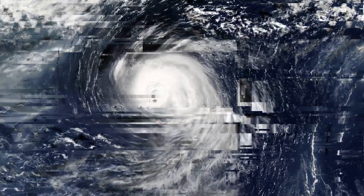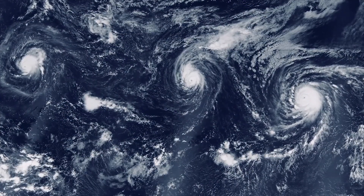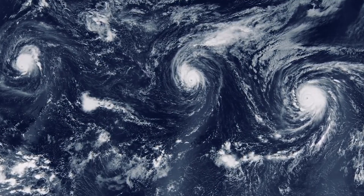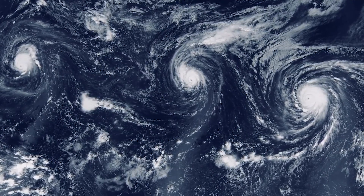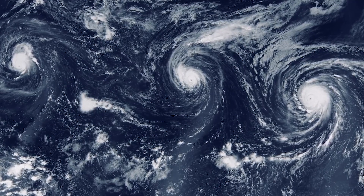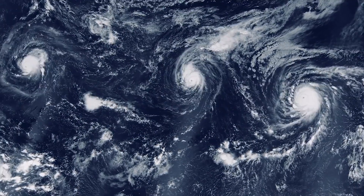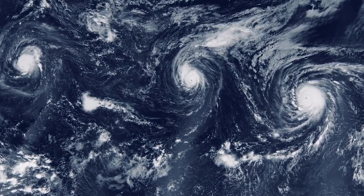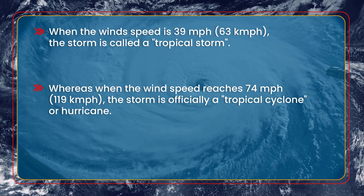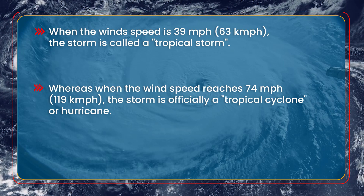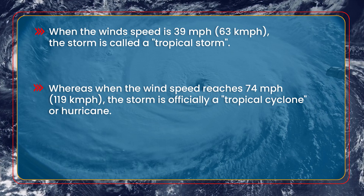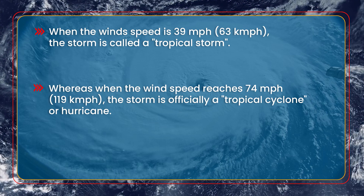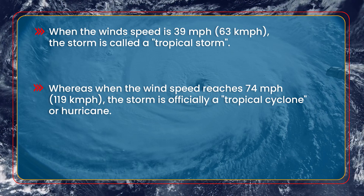As the wind system rotates with increasing speed, an eye gets formed in the middle. The center of a cyclone is very calm and clear with very low air pressure. The difference in temperature between the warm, rising air and the cooler environment causes the air to rise and develop further. When the wind speed reaches 63 km per hour, the storm is called a tropical storm. Whereas when the speed reaches 119 km per hour, the storm is officially a tropical cyclone or hurricane.